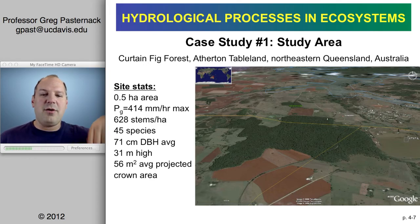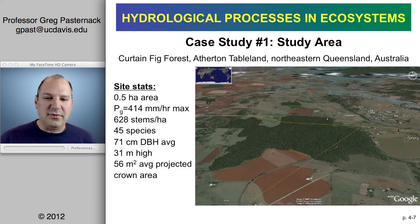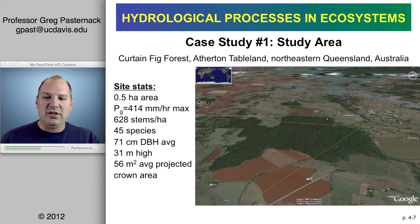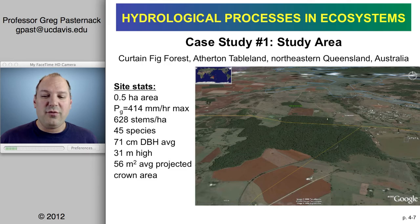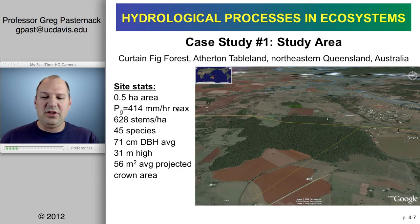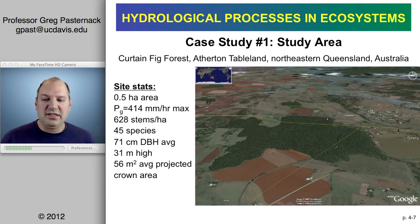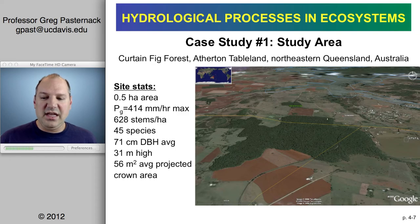When you get to the top of the escarpment, you're on a vast plateau called the Atherton Tableland. In this case, the study was done in a relatively small area with very intense peak rainfalls — up to 414 millimeters per hour. There was a relatively modest stem density compared to the temperate and semi-arid studies, but 45 species present at the site with an average diameter at breast height of 71 centimeters.